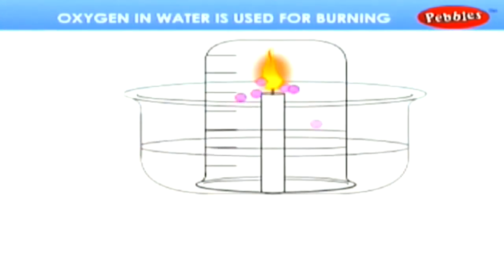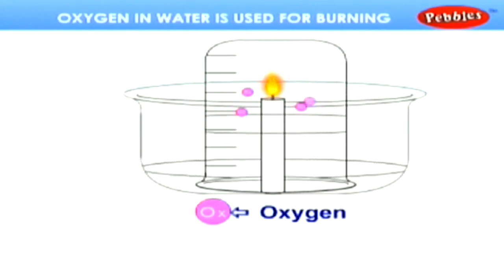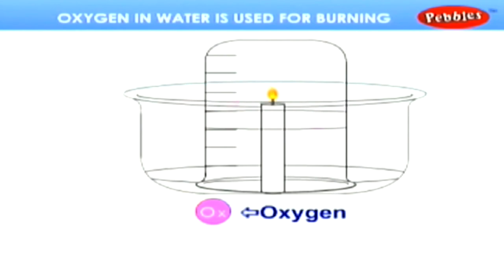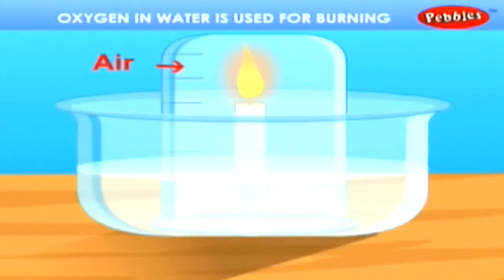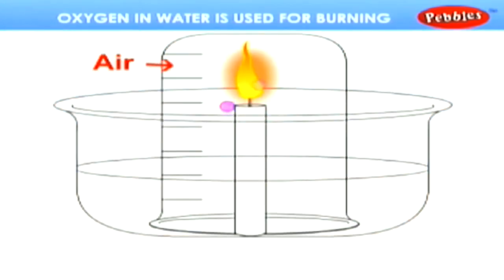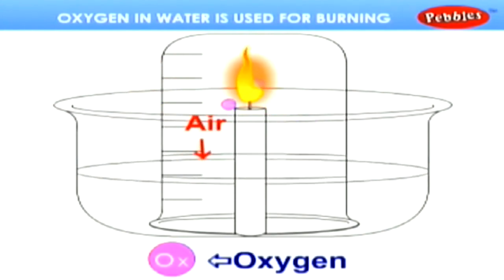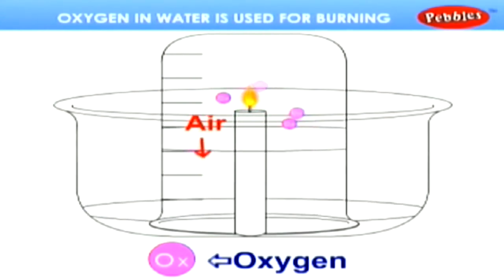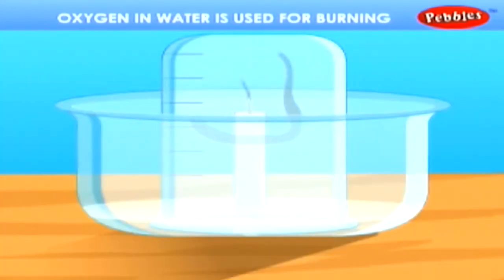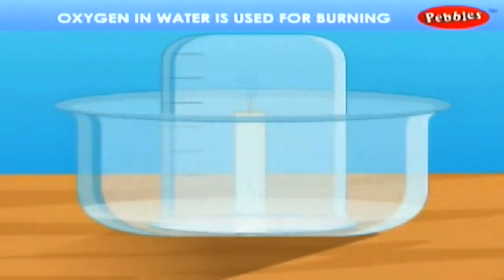Rising of the water level to mark one in the glass shows that one fifth of the air in the glass is used up during burning. In this experiment, as we have closed the candle with a glass jar, the oxygen in the air inside the jar has been completely used. And then the candle utilizes the oxygen present in the water for burning. As the oxygen present in the water has been used, the level of water increases. When the oxygen present in water is fully utilized, the candle stops burning as the oxygen from atmosphere cannot enter into the jar.